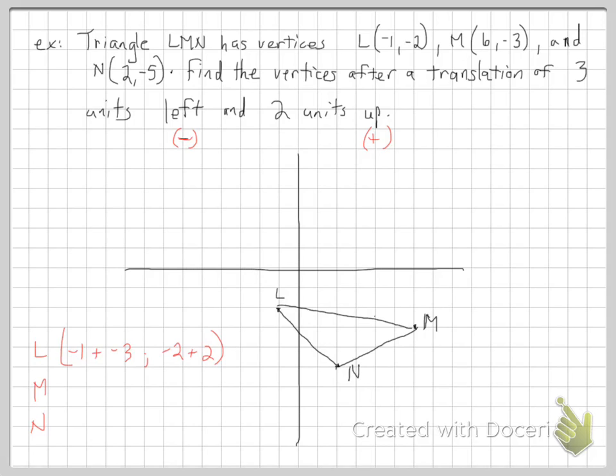That should get us to our new point. So negative 1 plus negative 3, that is negative 4. And then negative 2 plus 2 would put us on the x-axis exactly.